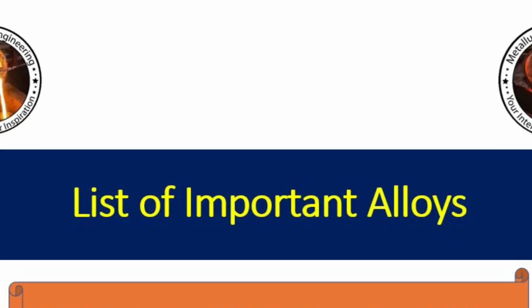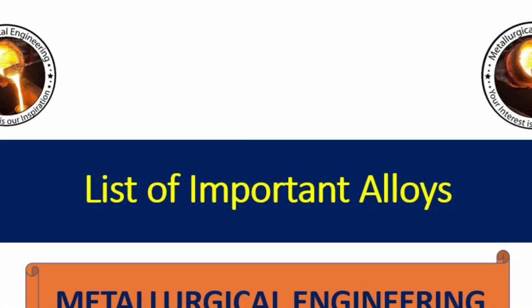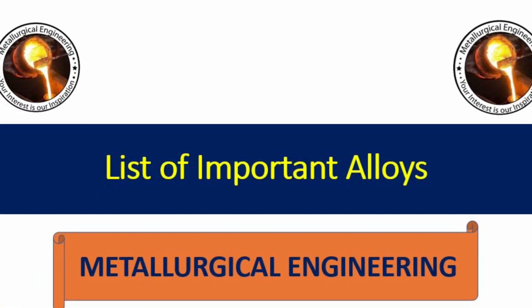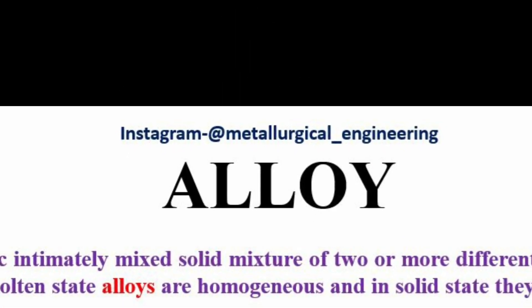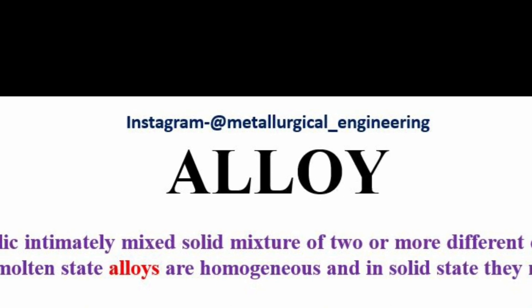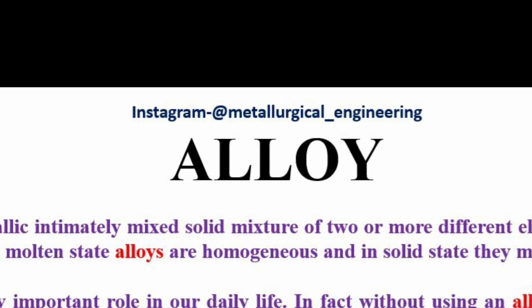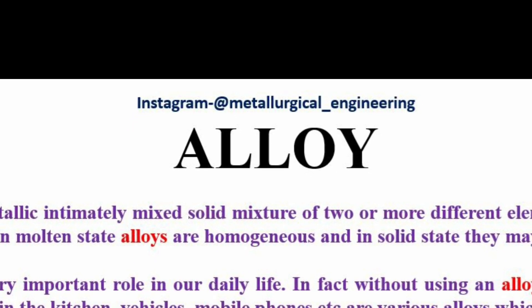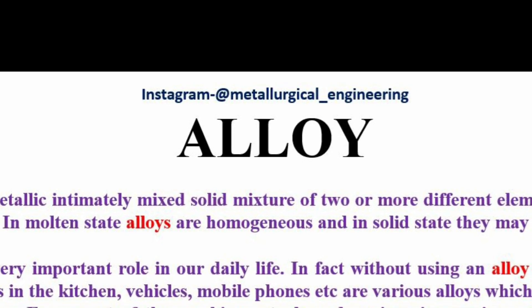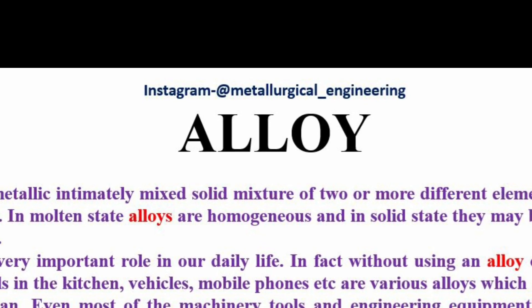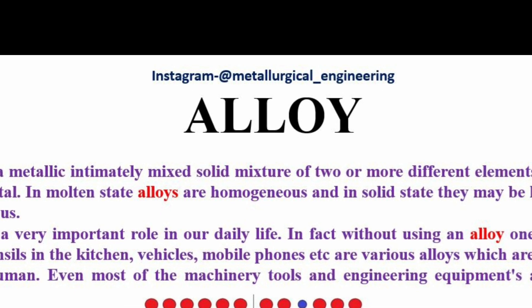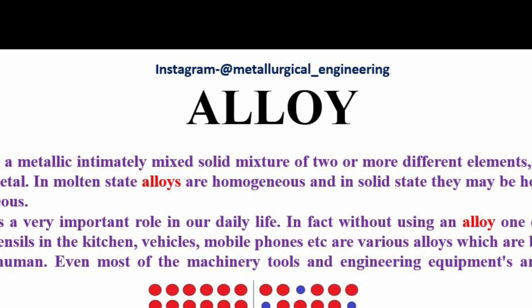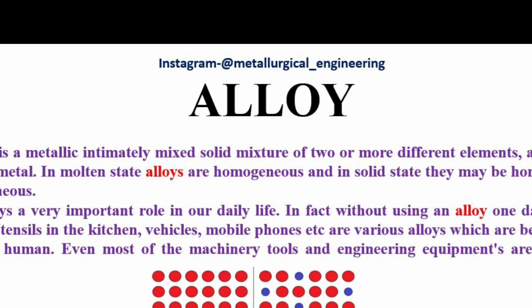Hello everyone. In this video we are going to list out the important alloys with compositions and uses. An alloy is a metallic intimately mixed solid mixture of two or more different elements, at least one of which is metal. In molten state alloys are homogeneous and in solid state they may be homogeneous or heterogeneous.